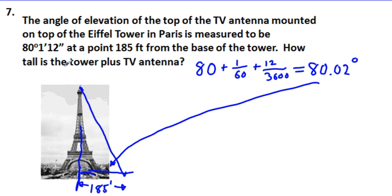And so what kind of ratio are we going to use to set up to solve for the height of the tower plus the antenna? Tangent. Tangent. And why would you say that, Shelly? Opposite and adjacent.